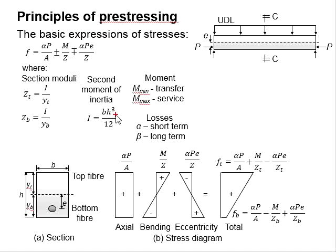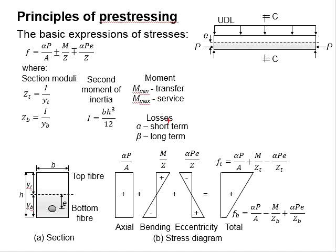The compressive stress is calculated by dividing the pre-stressing load by the cross-sectional area of the section. The bending stress is calculated by dividing the moment by the section moduli. As for the eccentricity, the pre-stressing load is to be multiplied with the eccentricity divided by section moduli.